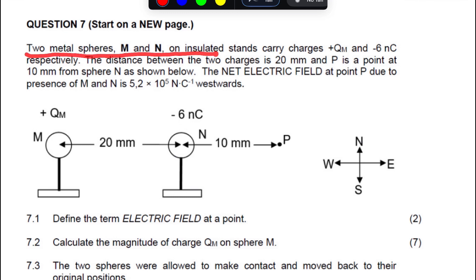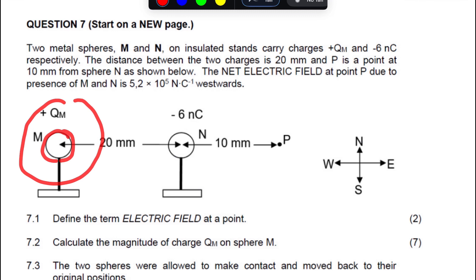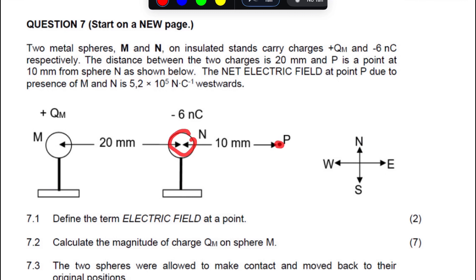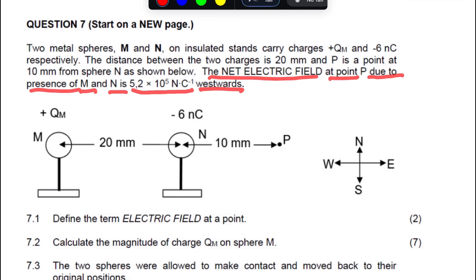Two metal spheres M and N on an insulated stand: M carrying a positive charge — we are not given the quantity of charge — and N carrying negative 6 nanocoulombs. The distance between the two charges is 20mm. P is a point at 10mm from sphere N. The net electric field at point P due to M and N is 5.2×10⁵ newtons per coulomb, westerly direction.